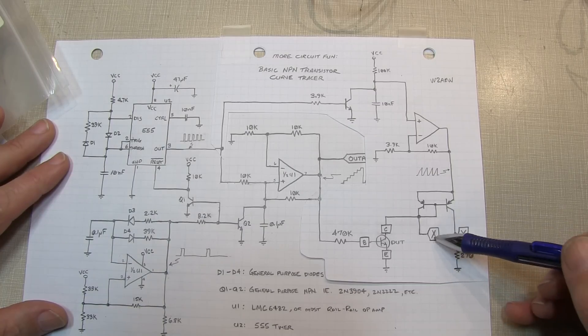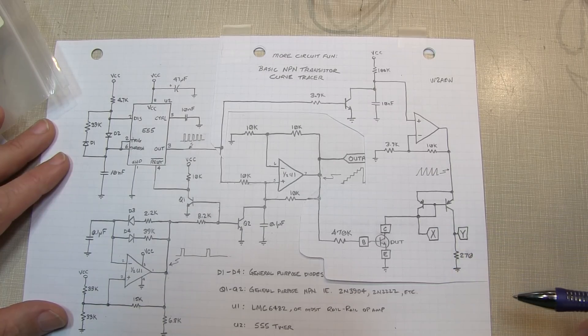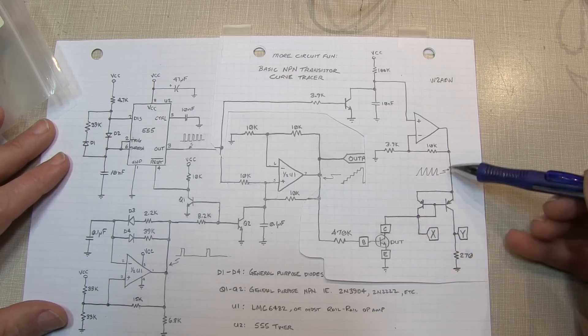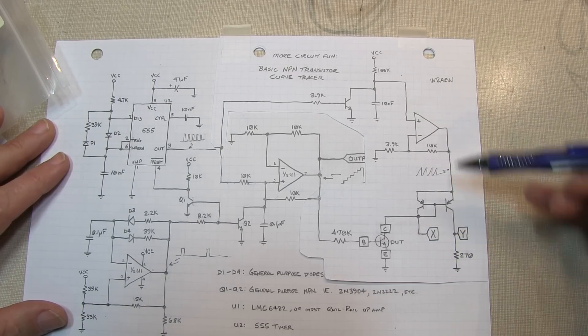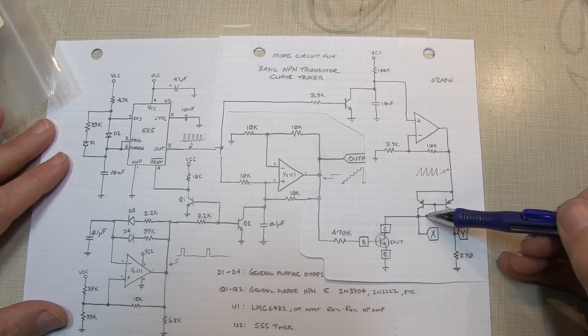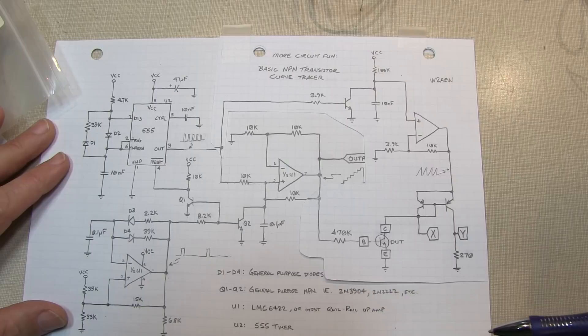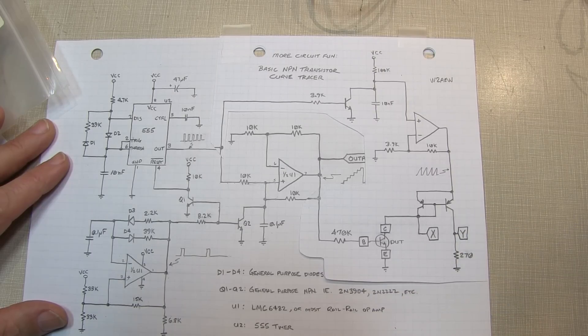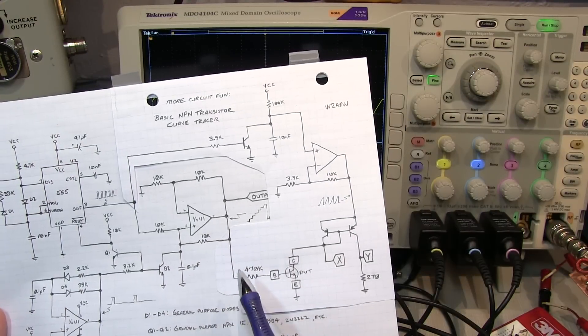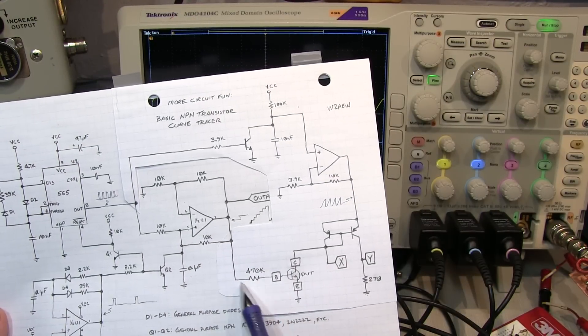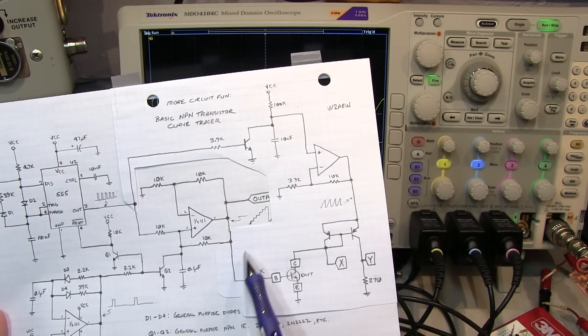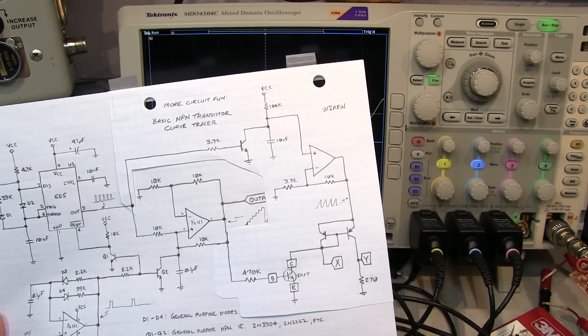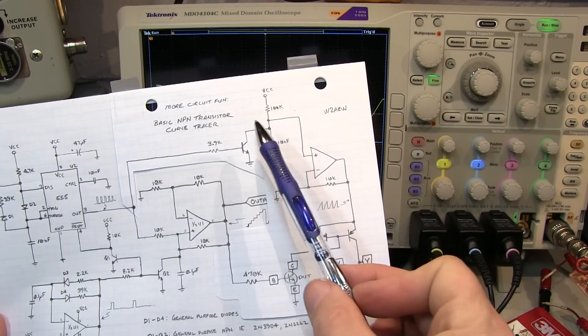Then essentially the two voltages that we measure here and here become our X and Y, because we're ramping the voltage that appears here. This is just a diode drop down below our ramp voltage here. That's essentially the voltage being applied to the collector, and then the current is being represented by the voltage that appears across this resistor. Understanding how this part of the circuit is working where we've got the stair-step voltage being applied here creates different base currents.